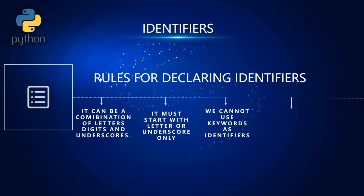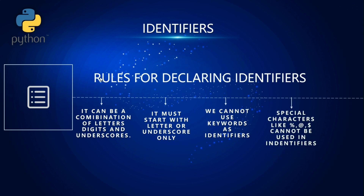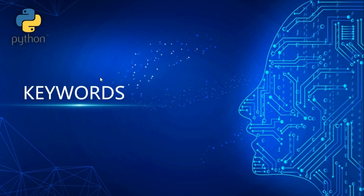We cannot use keywords as identifiers because keywords are reserved words with special meanings. Special characters like ampersand, at-sign, and dollar sign cannot be used in identifiers — only underscores are allowed.